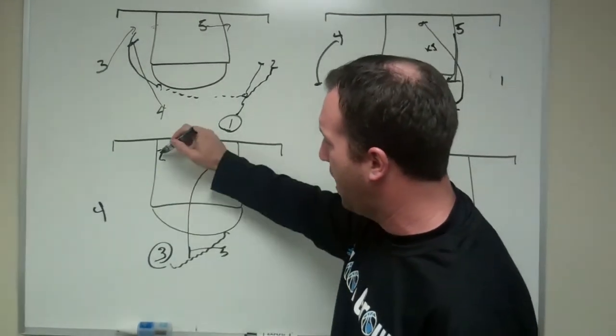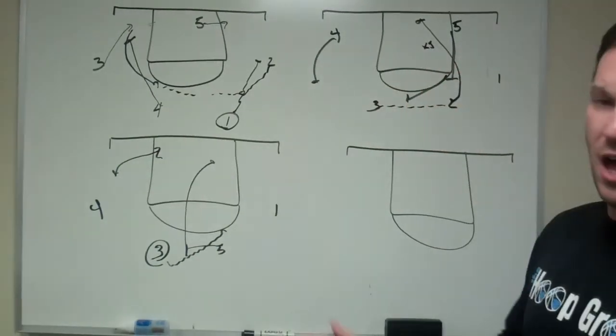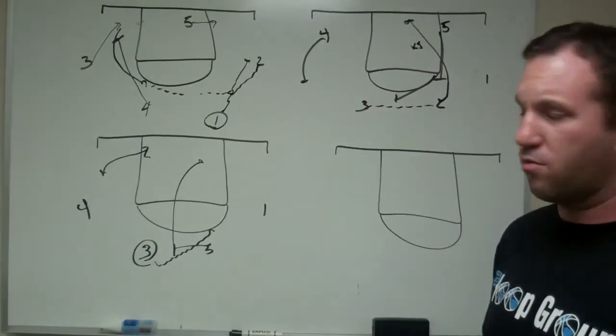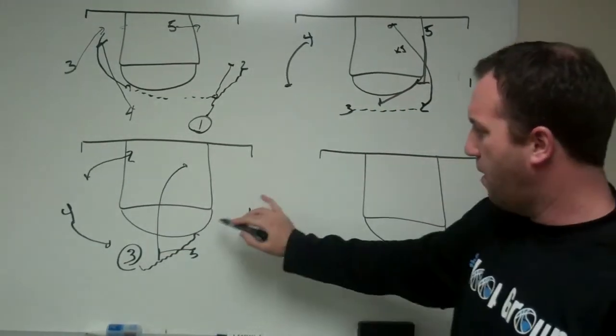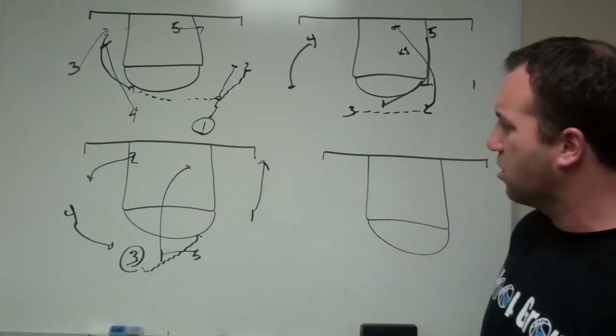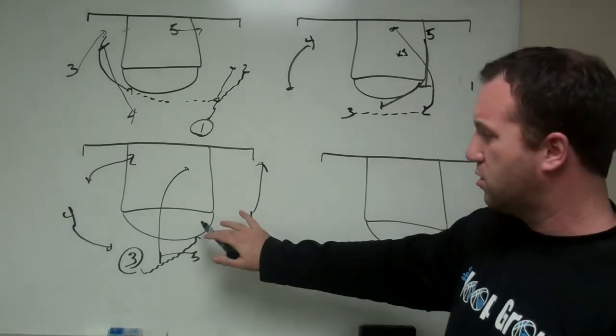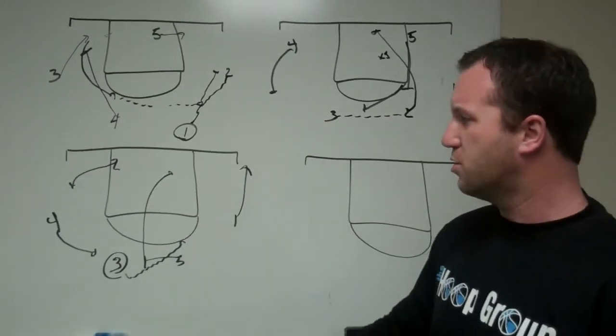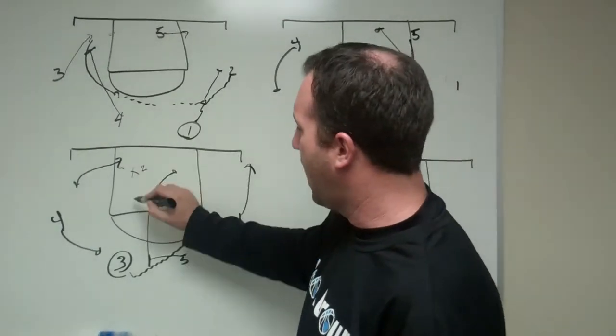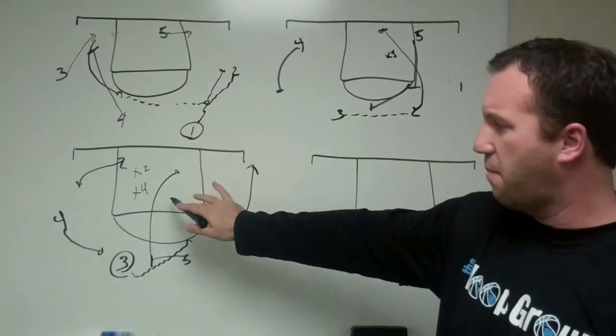Now as that's happening, 2-man must have gotten out. He goes for the lob and gets out, so his man can't help on the roll. And then X4 will lift high. 1-man will spot up and look to space to the corner if 3 looks to turn the corner. So what you'll get is, it's a really good play also, because X2 and X4 will look to help on that pick-and-roll.